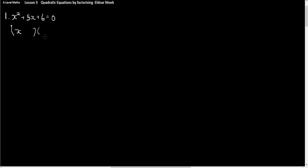To factorise, we've set up two brackets. x times x is x squared, so we can put x at the beginning of each bracket. The first bracket times the second bracket equals zero. To find out what goes into the brackets, we'll list the factors of six — that's the factor of the constant term. So we've got one and six, minus one and minus six, three and two, and minus three and minus two.